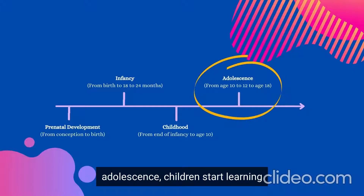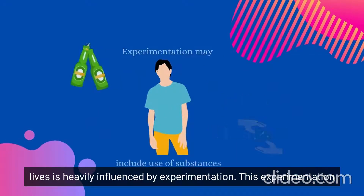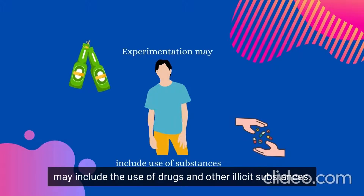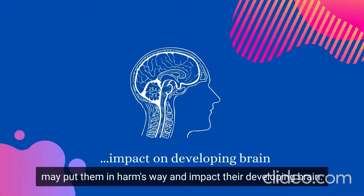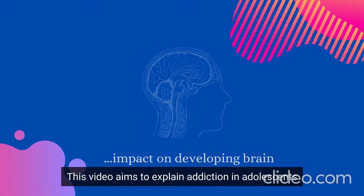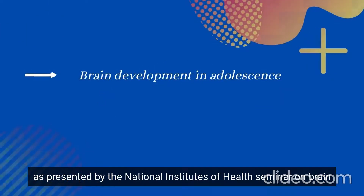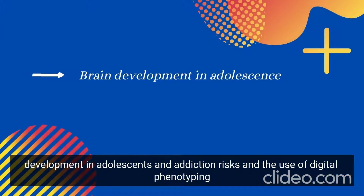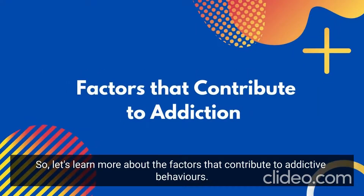At the developmental time period of adolescence, children start learning more about what they like, dislike, and how they fit in with their peers. This time in their lives is heavily influenced by experimentation, which may include the use of drugs and other illicit substances. Their experimental phase with particular substances may put them in harm's way and impact their developing brain. This video aims to explain addiction in adolescence, brain development, addiction risks, and the use of digital phenotyping to predict addictive behaviours.